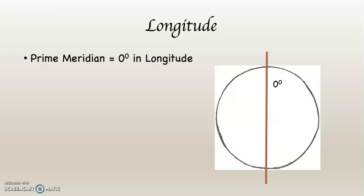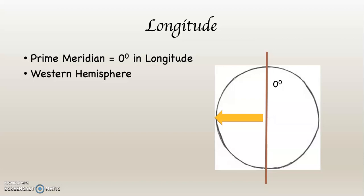Of course, you've heard of the equator. Maybe you haven't heard of the prime meridian — well, now you have. The prime meridian is the starting place for the counting system in longitude, and so we give it the designation of 0 degrees longitude. Everything east of the prime meridian is in the eastern hemisphere — half of a sphere. And everything west of the prime meridian is in the western hemisphere, the western half.